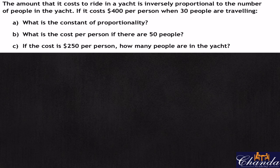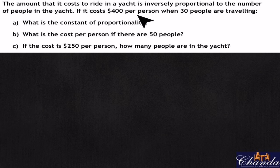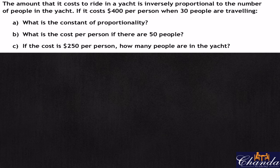This question says: the amount it costs to ride in a yacht is inversely proportional to the number of people in the yacht. If it costs $400 when 30 people are traveling, what is the constant of proportionality? I want you to pause the video and have a go at this question on your own — it will help you get an understanding of the constant of proportionality.